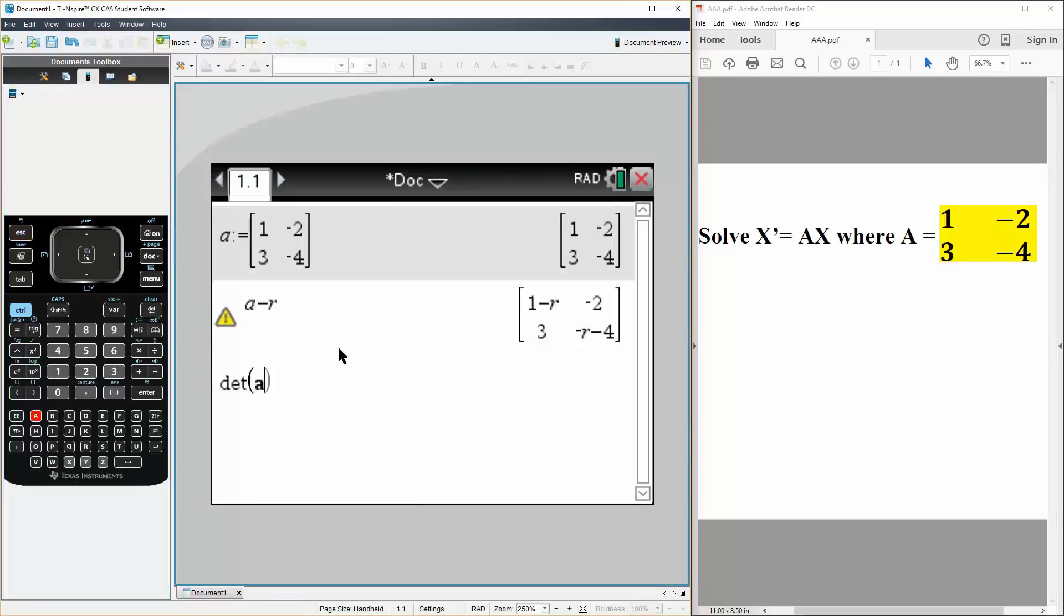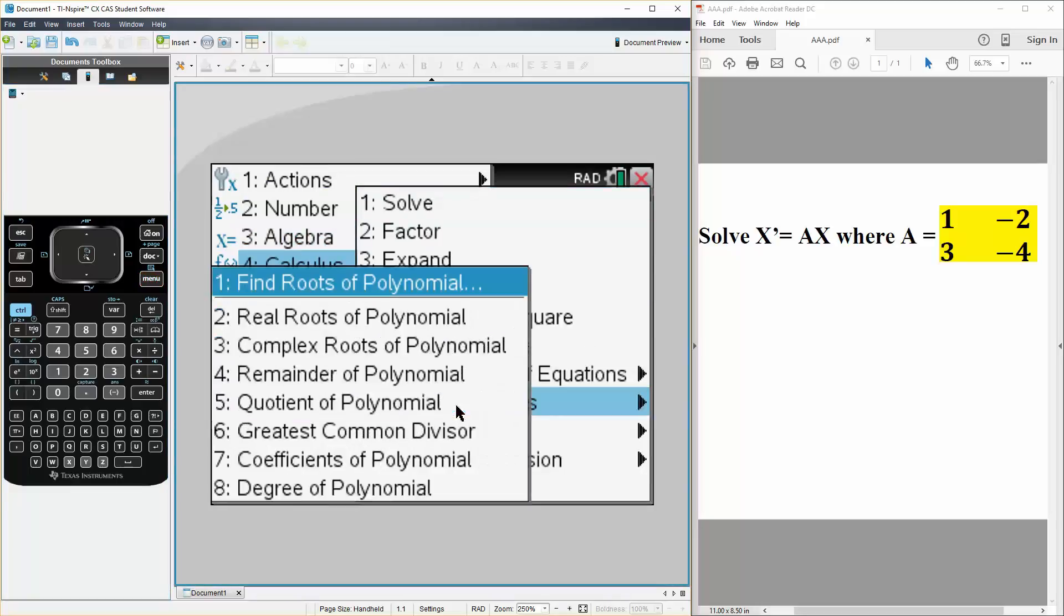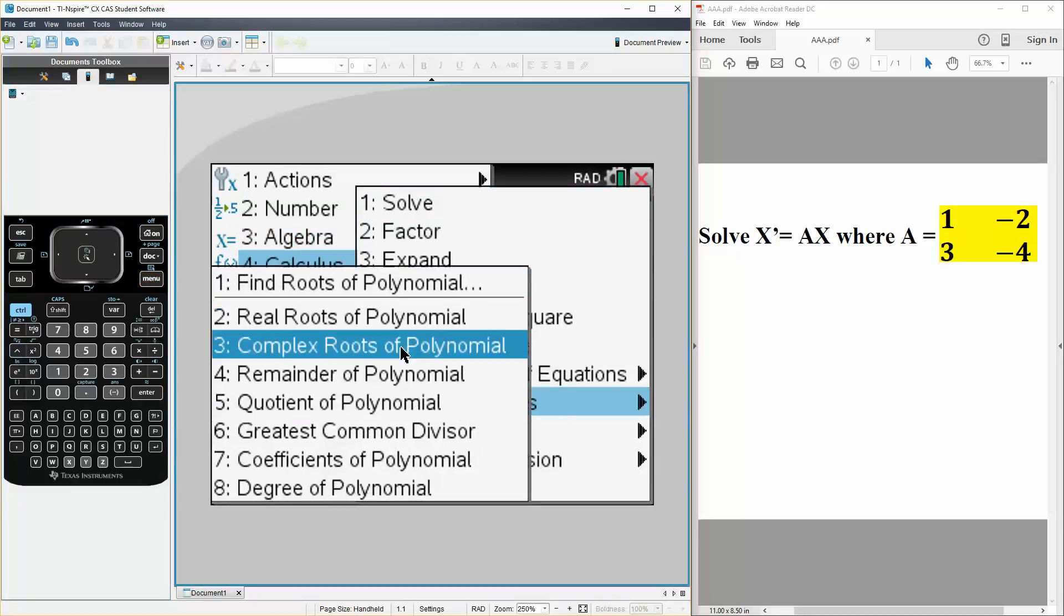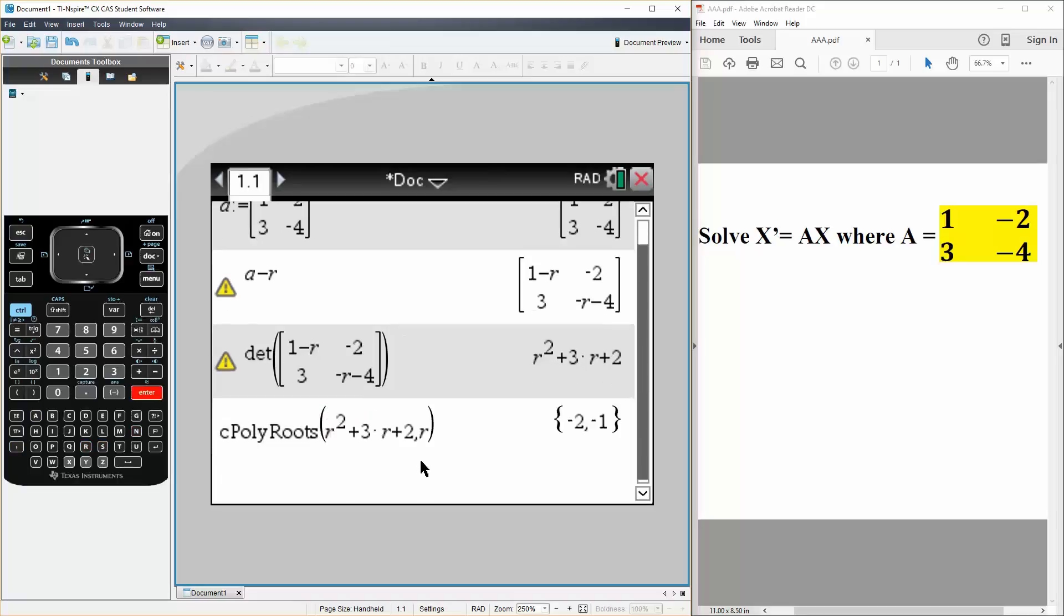We simply write answer, and this is what we get. Next we want to get the roots to get the eigenvalues. So we hit menu, algebra, we go to polynomial tools, and we go complex roots of polynomials, we write ans, answer, comma, r, and so our two eigenvalues will be negative 2 and negative 1.